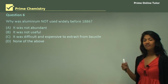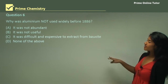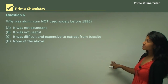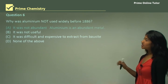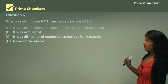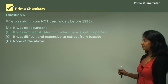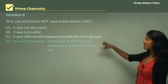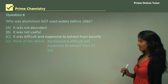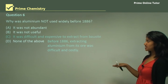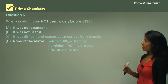Wrapping up the lesson, we covered titanium, aluminium and copper. Now we'll look at some questions reflective of what we just learned. The first question is a multiple choice question: why was aluminium not used widely before 1886? Option A — it was not abundant; aluminium is in fact an abundant metal found mainly in the earth's crust. Option B — it was not useful; aluminium has many great uses due to its great properties. Option D — none of the above; there is an option that does reflect the answer. The correct answer is Option C — it was difficult and expensive to extract aluminium from bauxite before 1886.